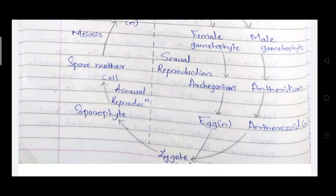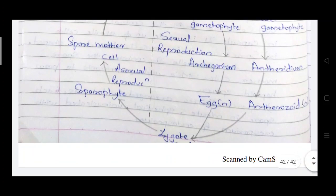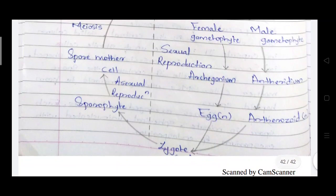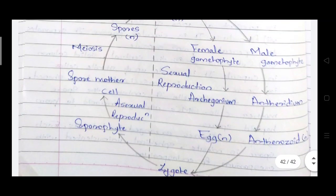The antherozoids enter the archegonium through the lid or cover cells and fuse with the egg cells, forming the zygote. The zygote is the beginning stage of the sporophytic generation, or sexual reproduction.